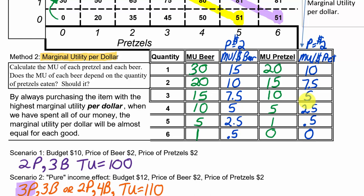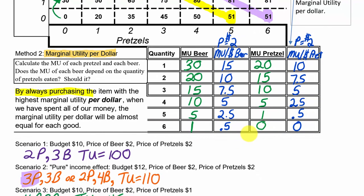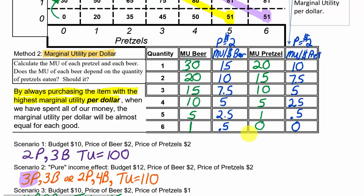Here's the process: if you have money to spend, the textbook process says start by spending on the thing that gives you the highest bang for your buck - the highest additional happiness per dollar spent. We have $10 and we're just going to keep track of spending. What should we buy first? We have $10 and the algorithm is to buy the thing with the highest additional happiness per dollar. Is it the first beer at 15 happiness per dollar, or the first pretzel at 10? Of course it's the beer.